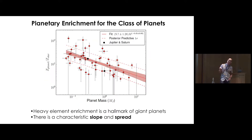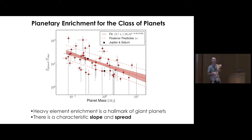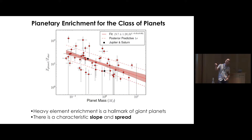We can also make a diagram showing Z_planet — the metals mass fraction of the planet from the structure model — compared to Z_star, the iron abundance of the parent star, as a function of planet mass. You can see a characteristic slope and a characteristic spread. To me the spread is as important as the slope: there's no one way of making a giant planet. At a given planet mass like Saturn's, there are less metal-rich and very metal-enriched examples — a big diversity.